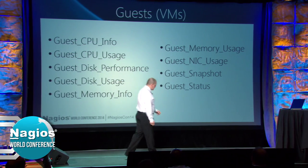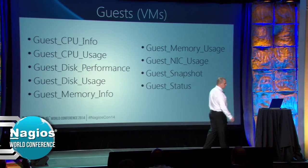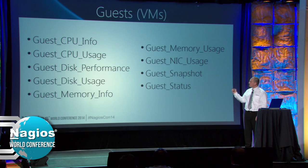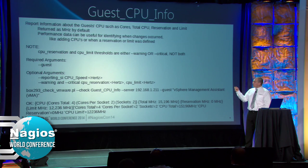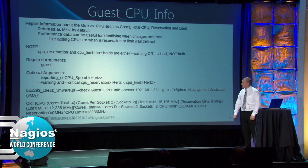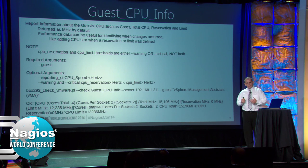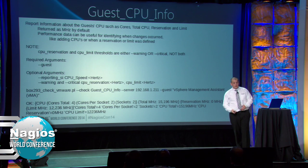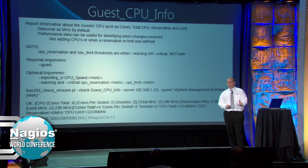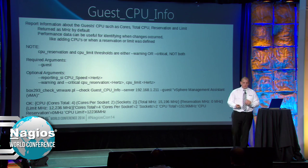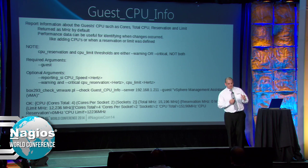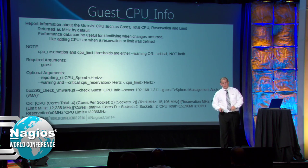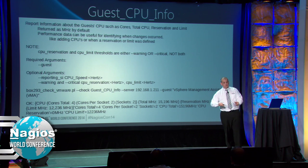Now, guests - I like to call them guests because it's more than a virtual machine and it's what VMware calls it. Guest CPU info - this is where you can look at reservations and limits and alert if there are reservations set or limits set or not set. How many CPUs, how many cores, what it adds up to in actual megahertz, how many sockets. You might have one socket but two cores per socket. You might want to make sure limits haven't been set or have been set.